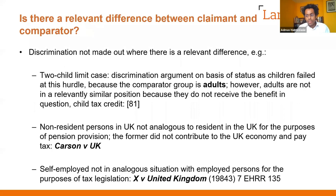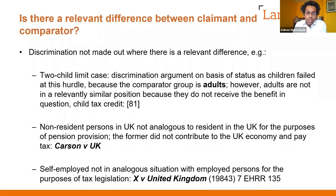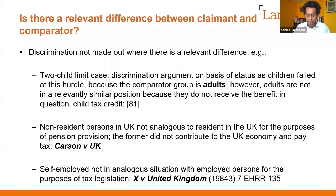Examples where claims failed at the comparator stage: in the two-child limit case, a discrimination argument based on the status of children failed because the comparator was adults, who did not receive child tax credits, so there was no basis for comparison. In Carson, non-resident persons in the UK were found not analogous to those resident in the UK for pension provision purposes because the former did not contribute to the UK economy and pay tax whereas the latter did — an apples and oranges situation requiring no proportionality analysis.